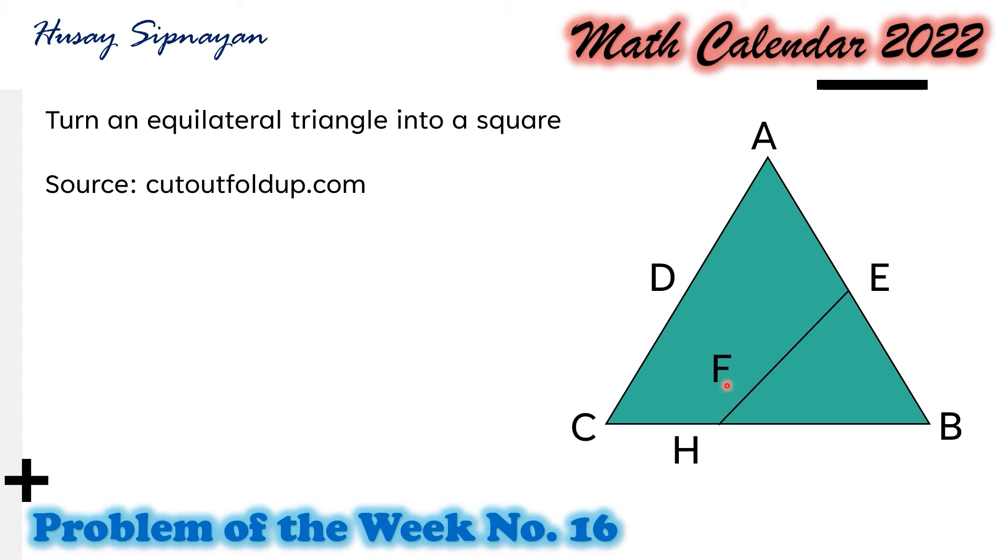Also, locate point F on segment EH and also point G. Draw segment DF such that it is perpendicular to segment EH. And also, locate point I on side BC and then draw segment GI such that it is perpendicular to segment EH.